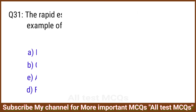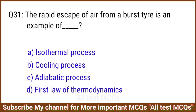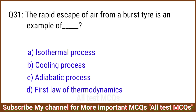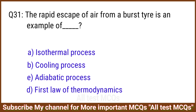Q31. The rapid escape of air from a burst tire is an example of? The right answer is option C: Adiabatic process.